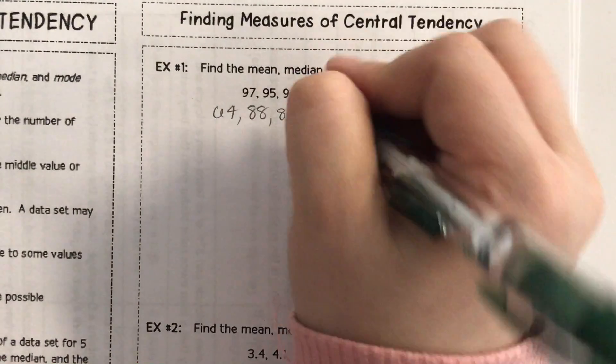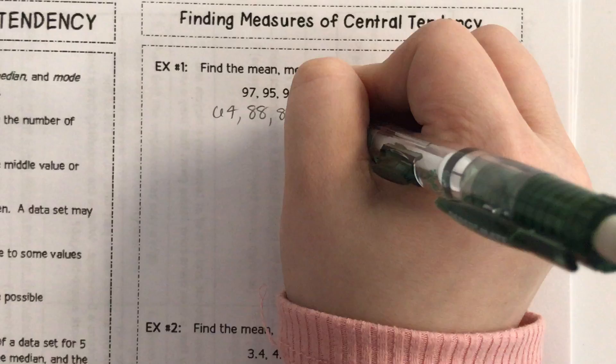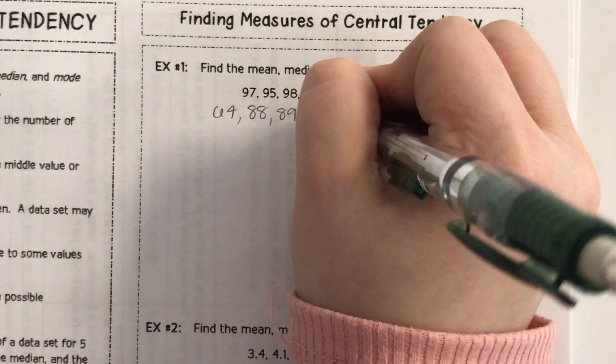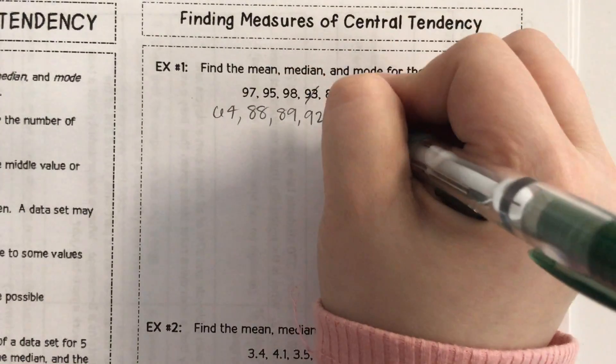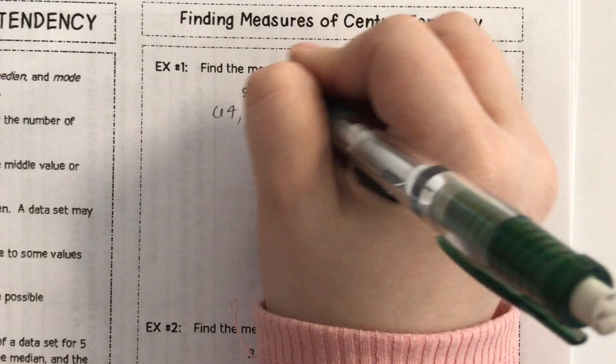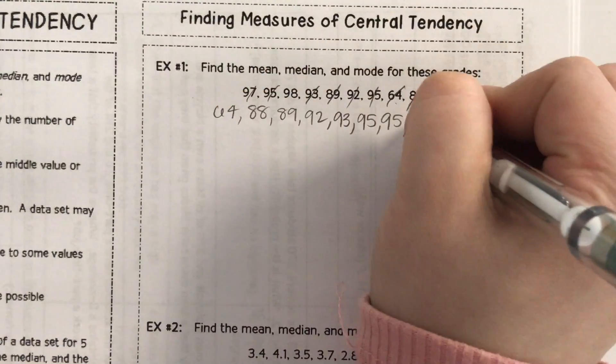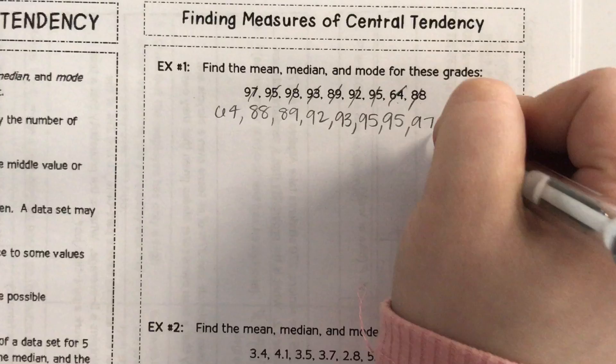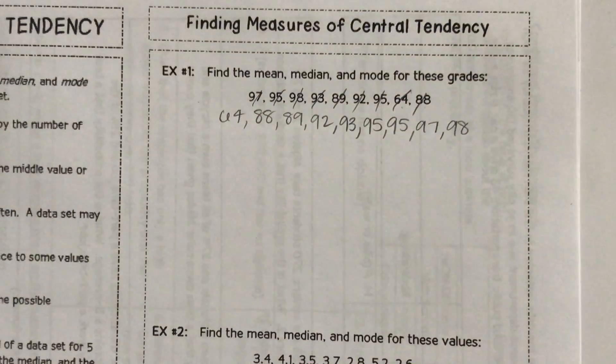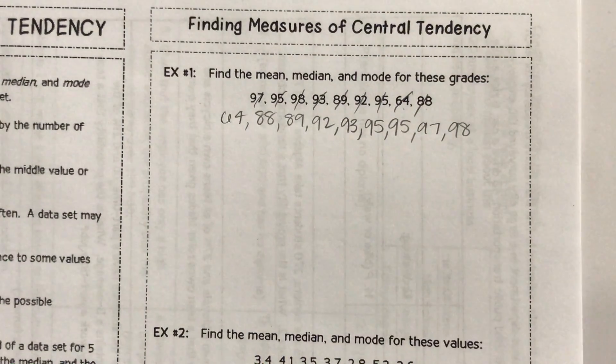89, 92, 93, 95. There's two 95s. Yes, write them both. 97, and 98. Okay, so I listed them in order.